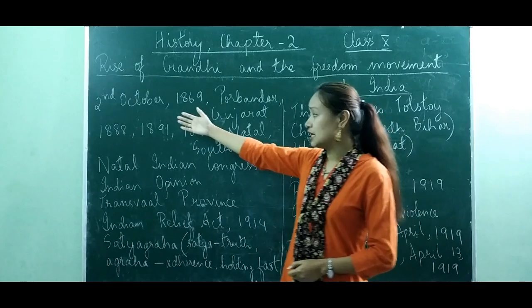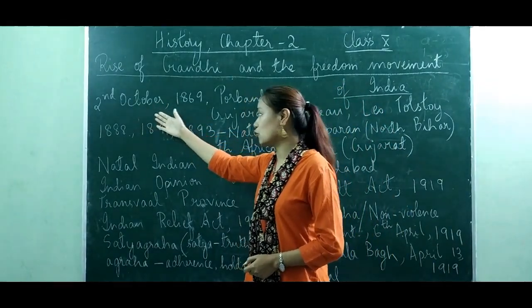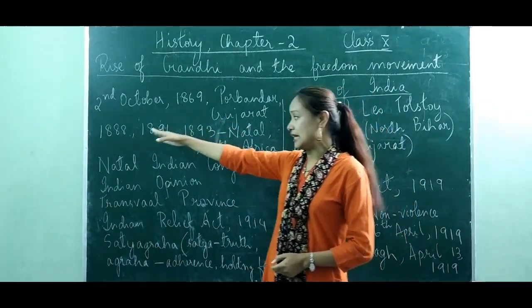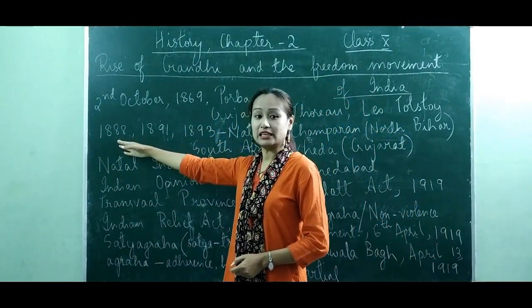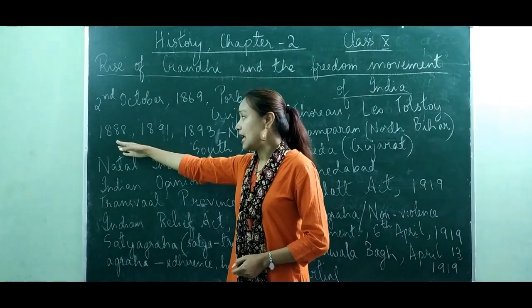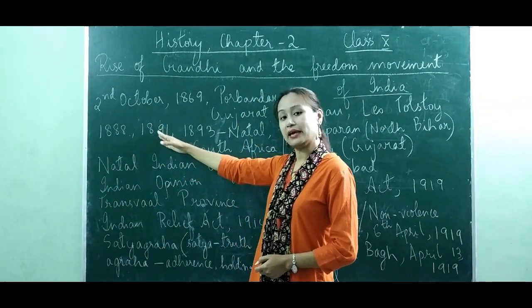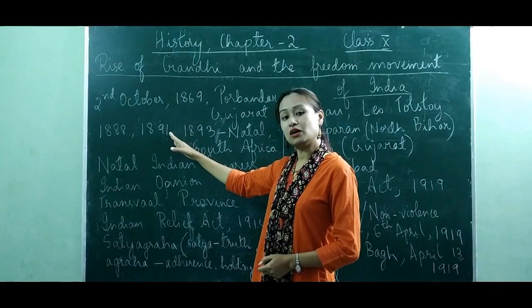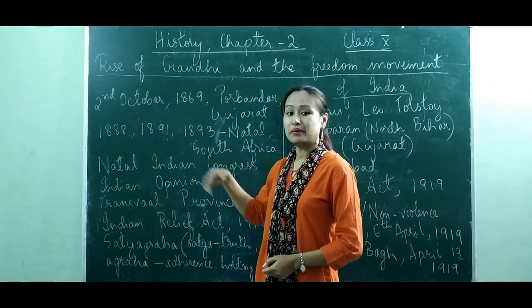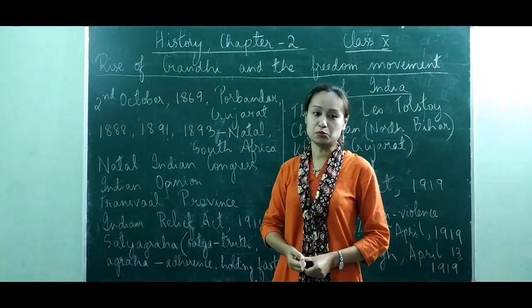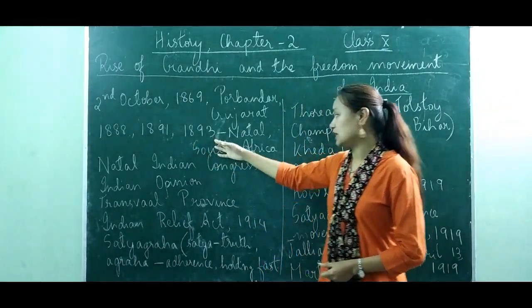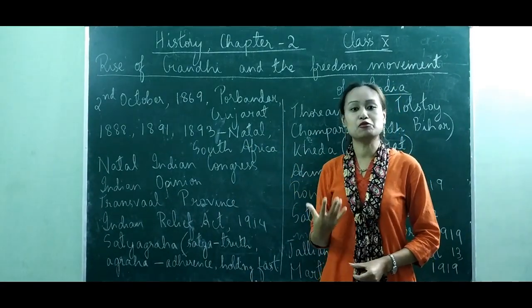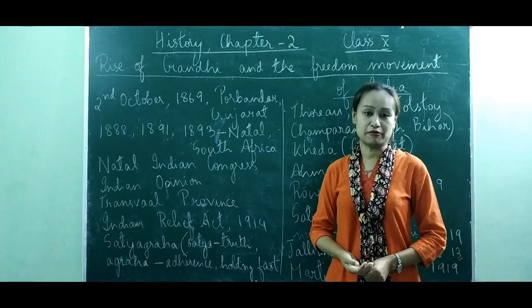As we all know, Gandhiji was born on 2nd October 1869 at Porbandar, Gujarat. In 1888 he went to England to carry out his law study, and after completing his study he came back to India in 1891. From 1891 to 1893 he stayed in India and practiced law. In 1893 he went to Natal, South Africa and stayed there for about 21 years.